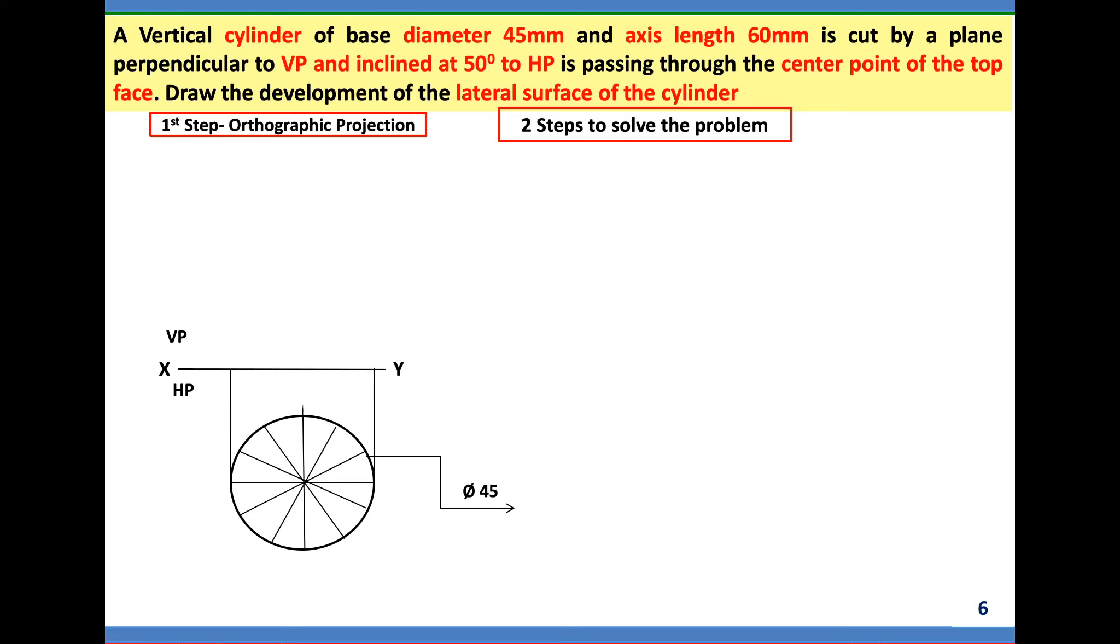Draw the vertical projectors. Axis height 60mm. Draw the front view, it will be a rectangle.